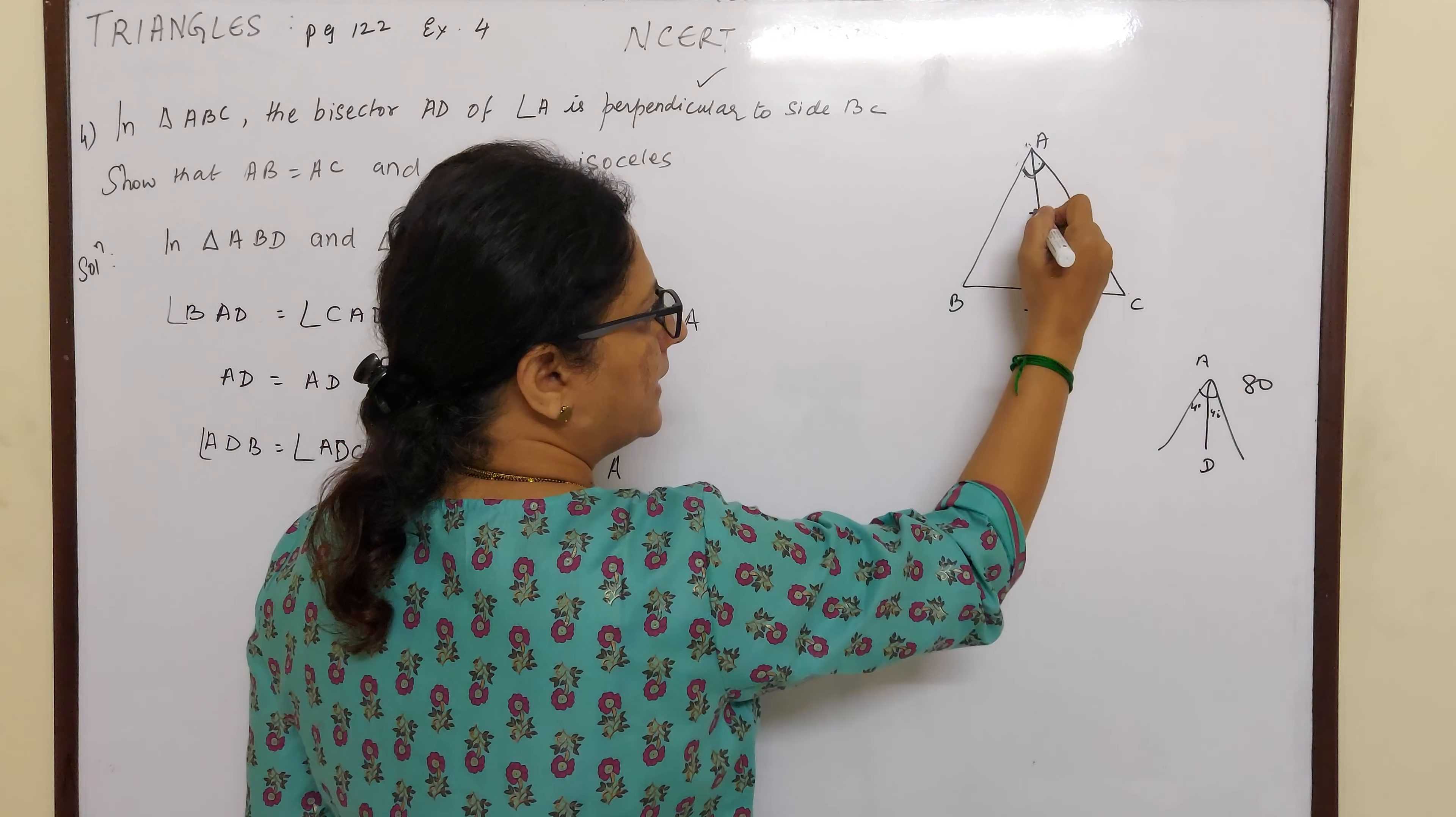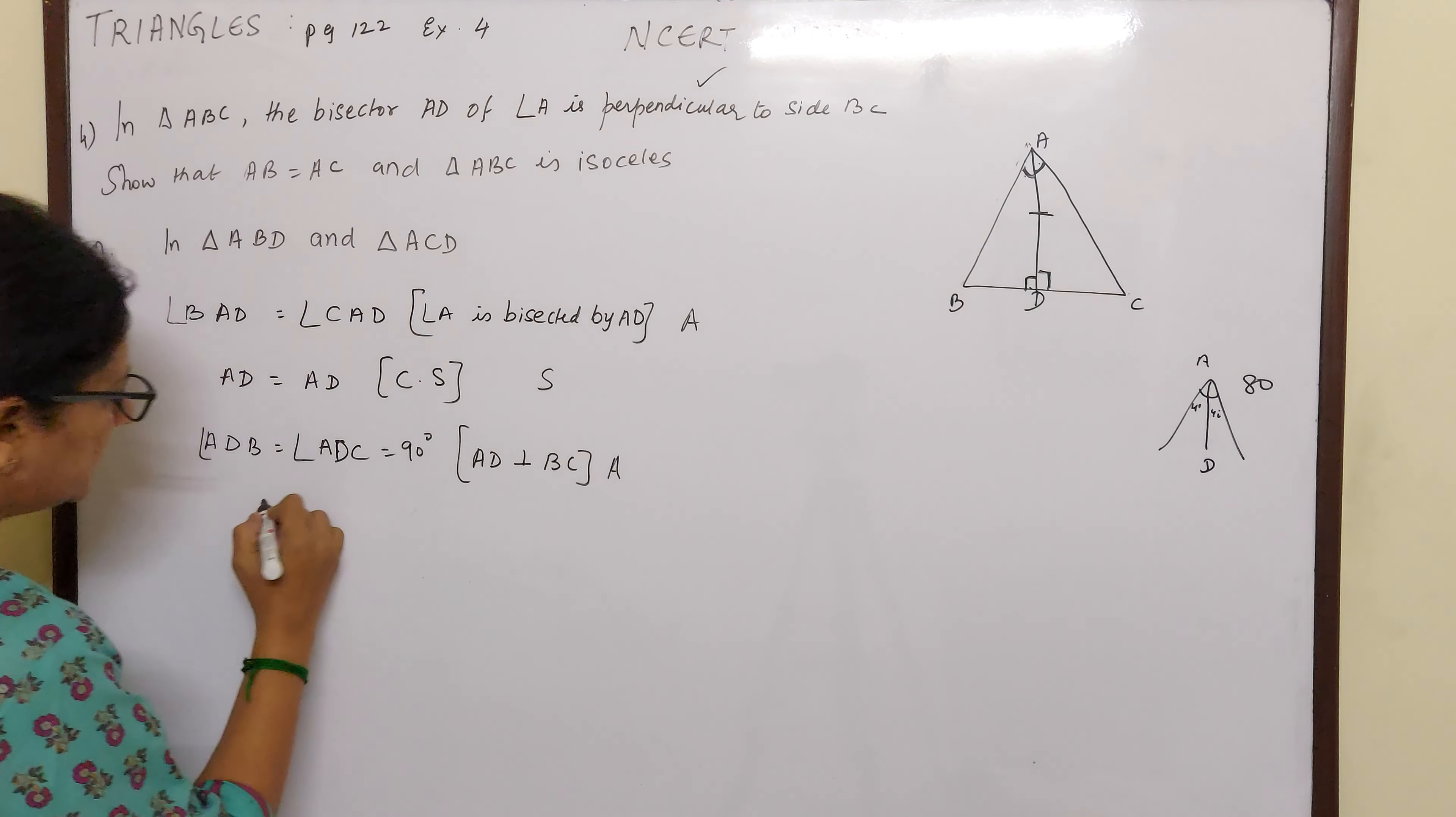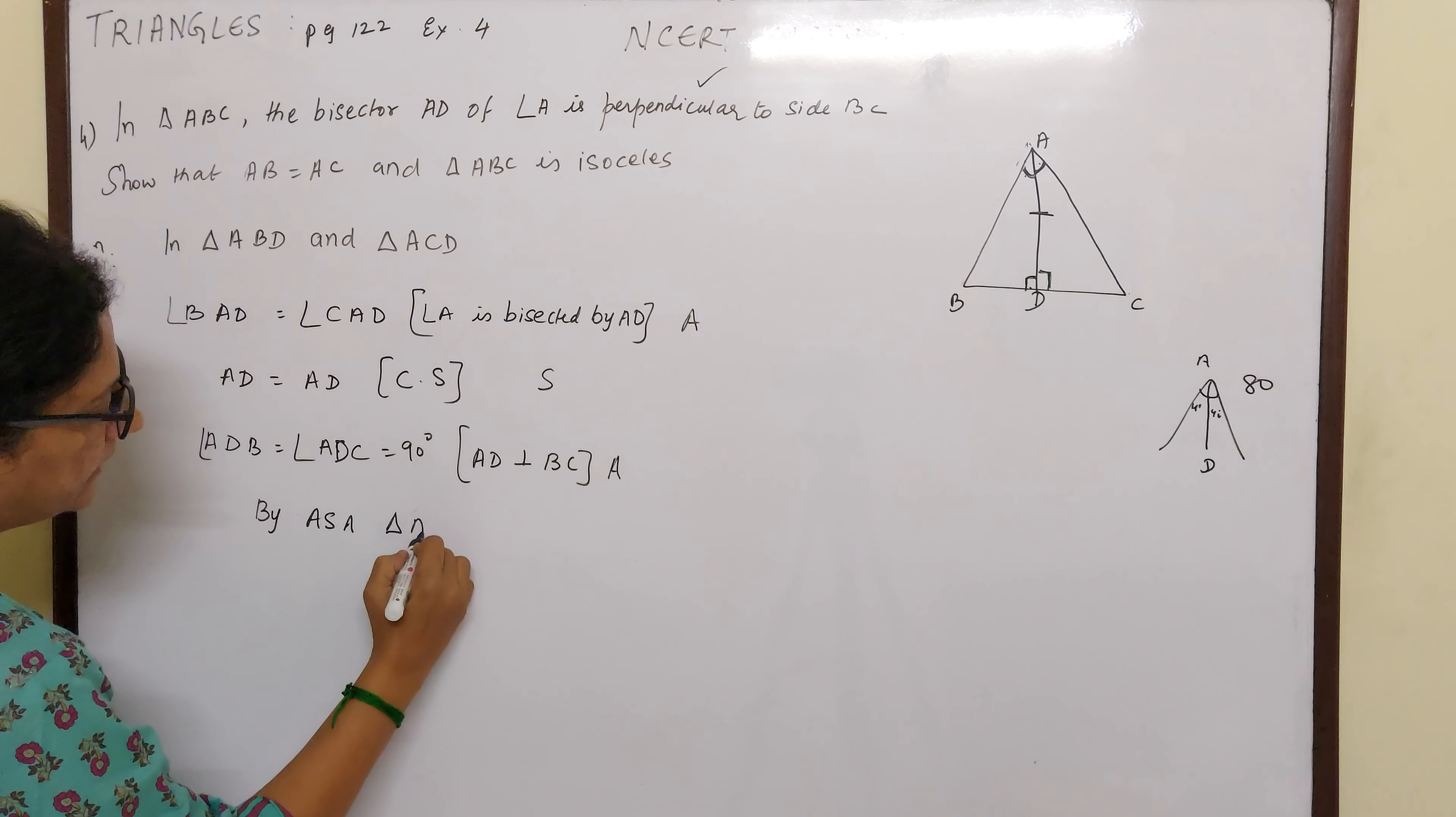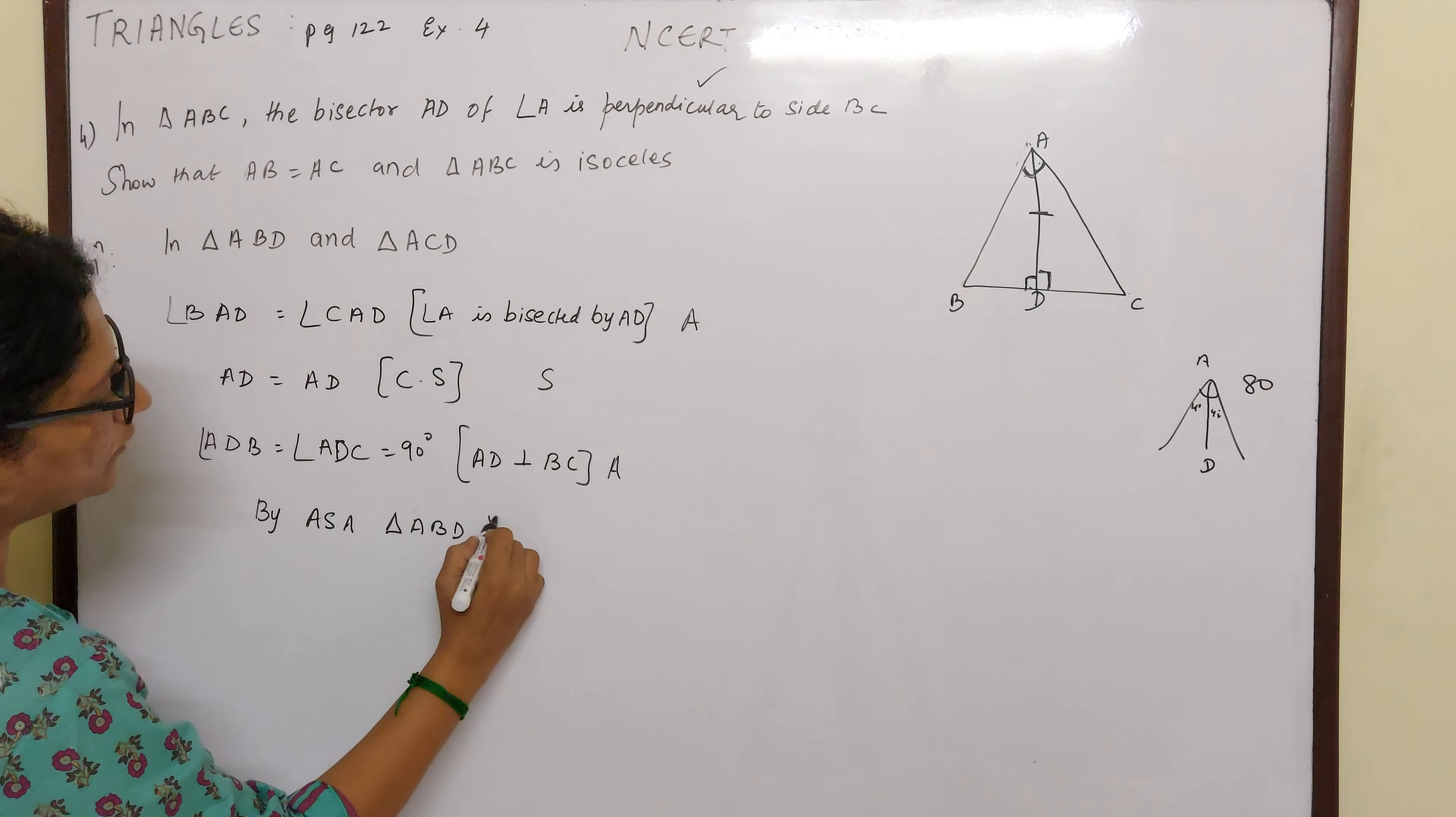If you see this side also, angle, side, angle. So I can say by angle, side, angle, ABD and ACD are congruent.